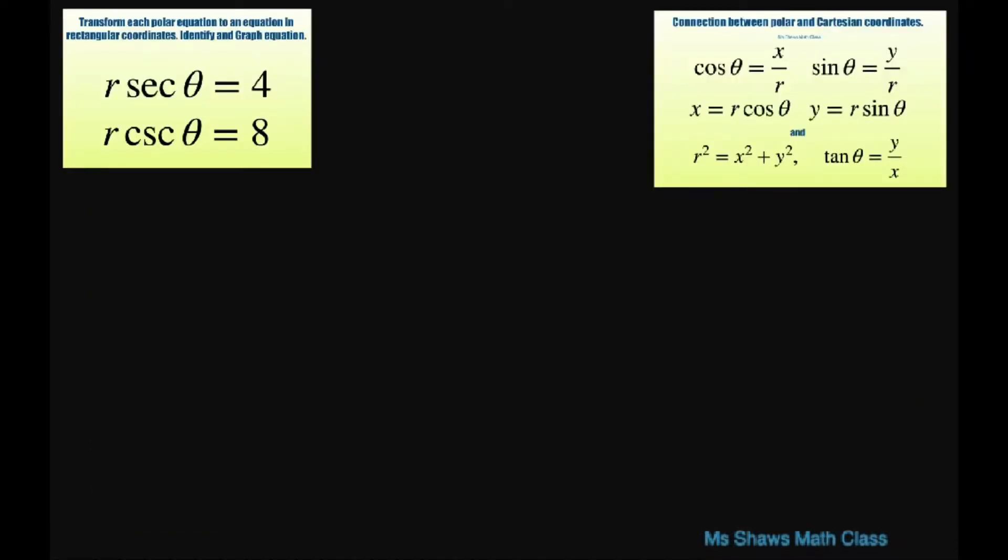Alright, so basically what we're going to do is rewrite this one as r times 1 divided by cosine of theta equals 4. You cross multiply, we get r equals 4 cosine of theta. The same thing goes for the second one: r times 1 divided by sine of theta equals 8, so r equals 8 sine of theta.